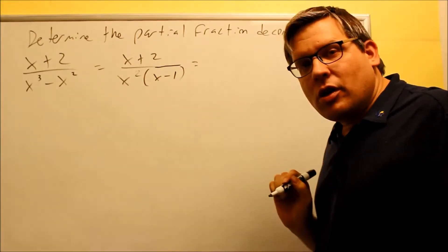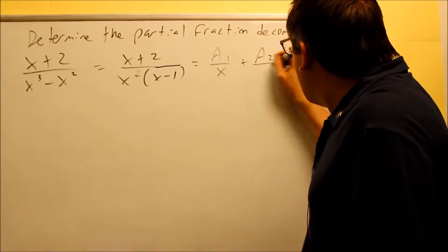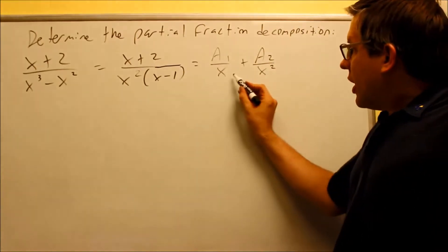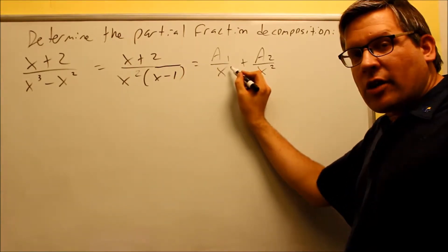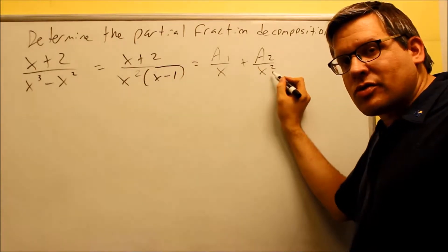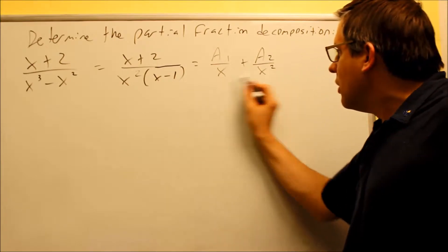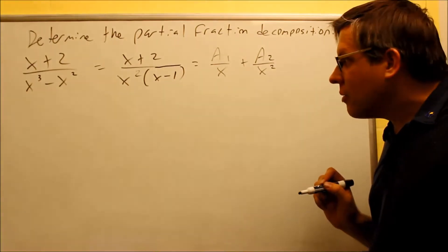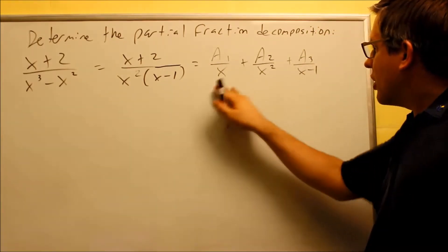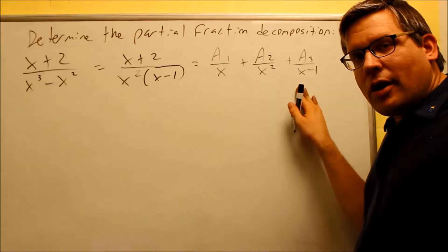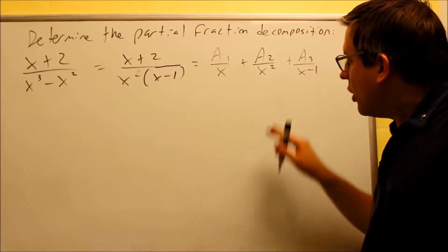Let's use rule number 2 for the x squared. That'll look like a1 over x plus a2 over x squared. Whenever you have a factor raised to a multiple power, you always begin with the first linear factor raised to the first power, then the second power, third power, fourth power — you keep doing that until you reach the highest power. In this case the highest power is 2, so we only have these two terms. Then we have a3 over x minus 1. This is the correct way to decompose this using a combination of rule number 2 and rule number 1.